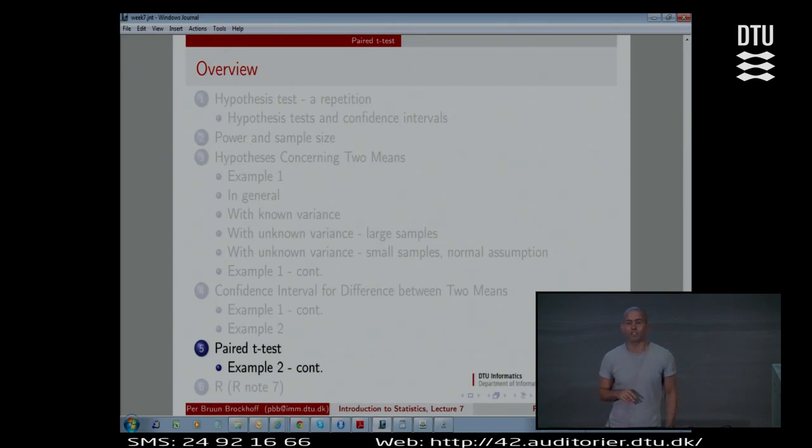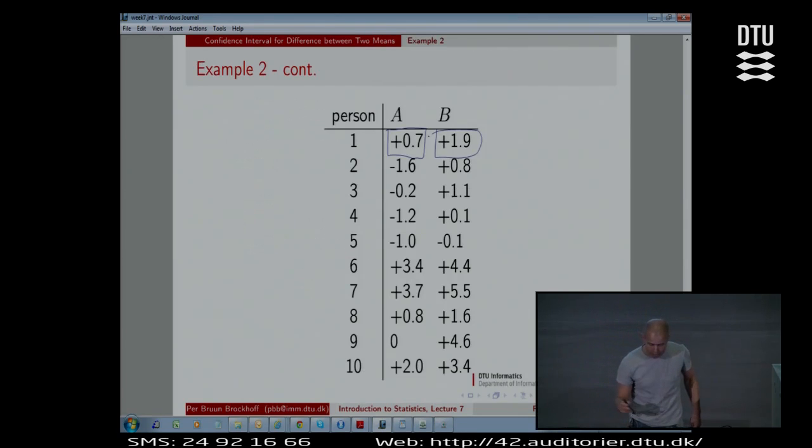The heading is the paired t-test, the two sample paired t-test. It's paired. The data in one column is paired with the data in the second column, because it's the same person. These two are paired, these two are paired. So the two samples are paired compared to before where they were independent, now they are dependent, or paired.